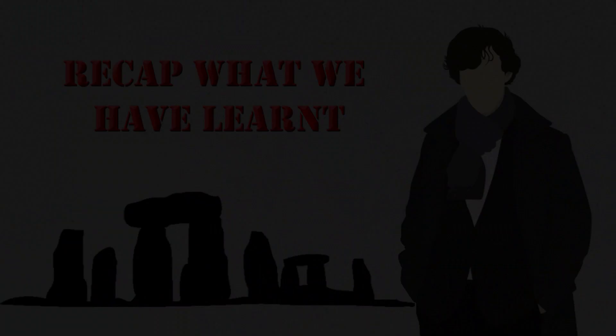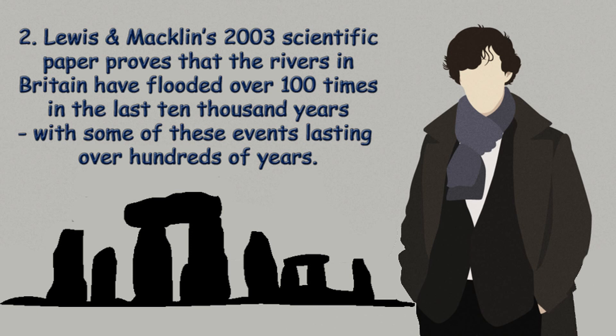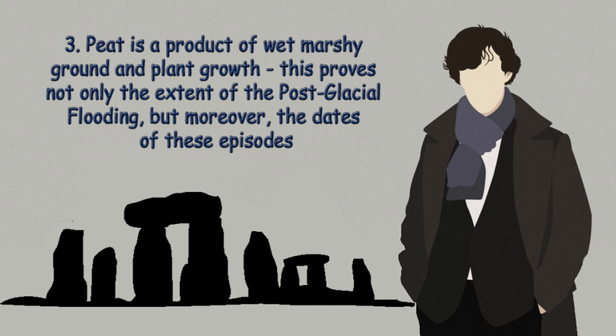Let us recap what we have learnt in this chapter. 1. The steady rise in sea levels over the last 10,000 years proves that water was still sitting on the land in the form of enlarged rivers, which would have kept the landscape flooded for thousands of years after the ice had finally melted. 2. Lewis and Macklin's 2003 scientific paper proves that Britain was flooded over 100 times in the past 10,000 years, with some events lasting hundreds of years. 3. Peat is a product of wet marshy ground and plant growth, proving not only the extent of post-glacial flooding but moreover the dates of these episodes.